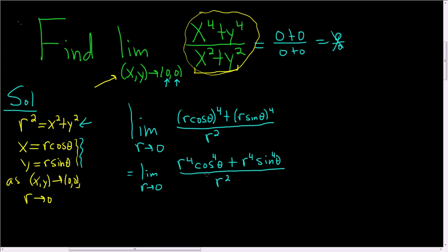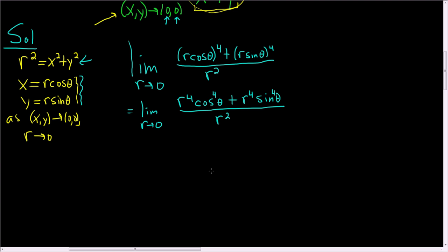Let's go ahead and factor r to the 4th out from the numerator. So this is equal to the limit as r approaches 0. Factoring out r to the 4th, we're left with cosine theta to the 4th power plus the sine of theta to the 4th power as well. And in the denominator, we still have r squared.